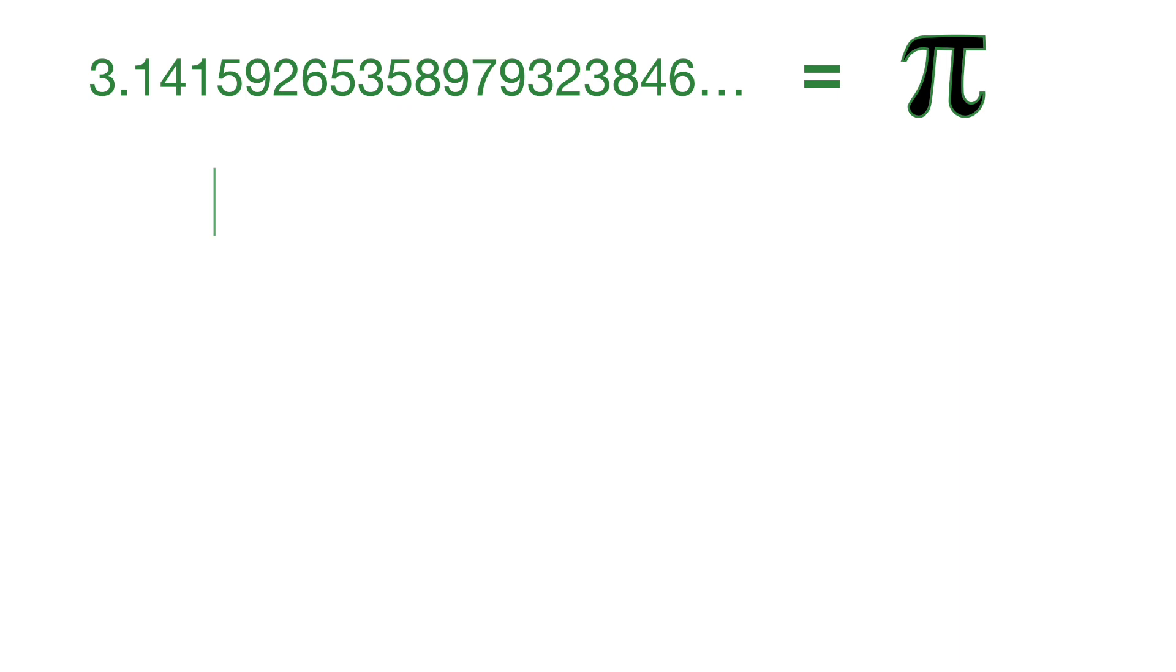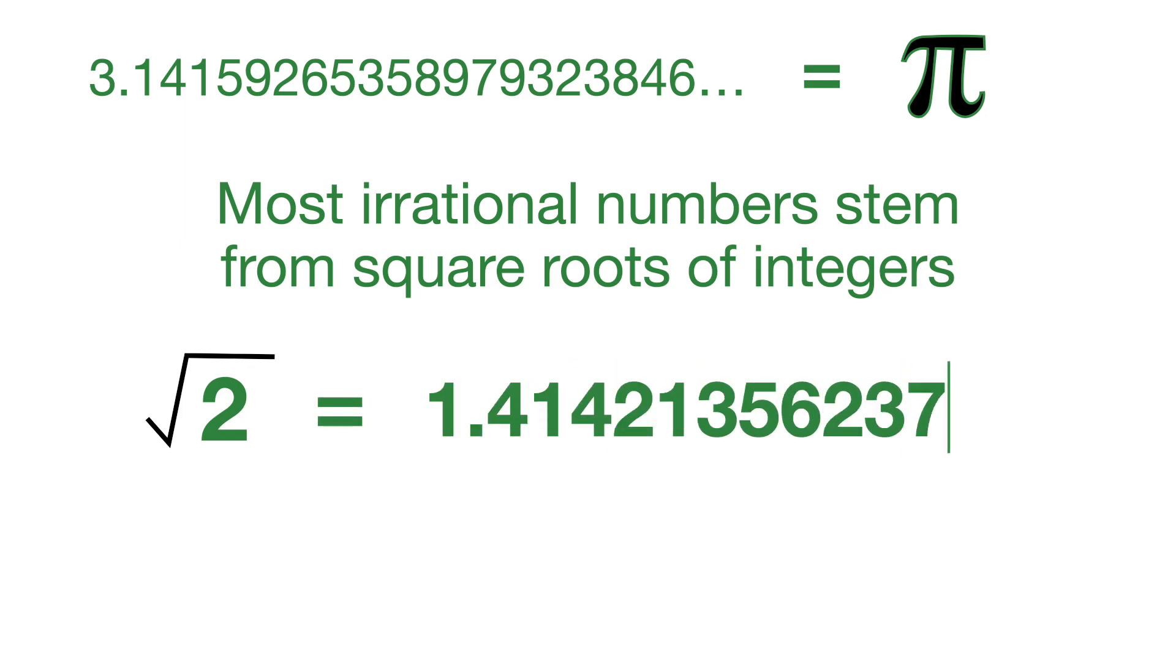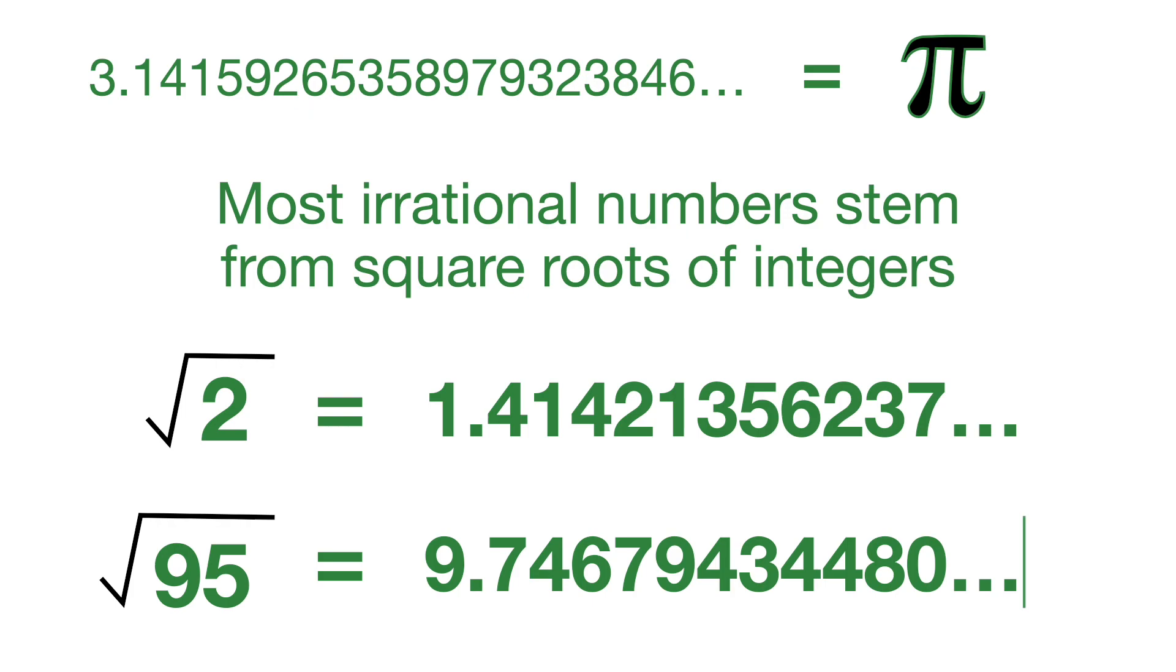One thing you should note is that most irrational numbers actually stem from square roots of integers. So if you have the square root of 2, that is going to be an irrational number: 1.41421356237 and that keeps going on forever. Square root of 95 also goes on forever like this.